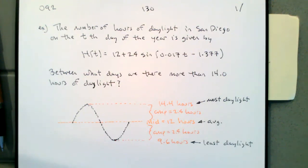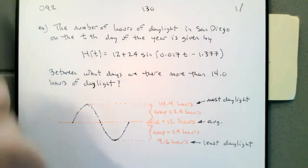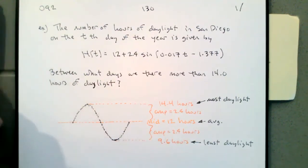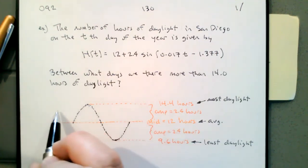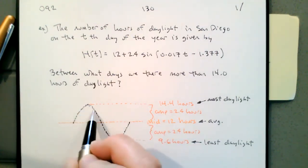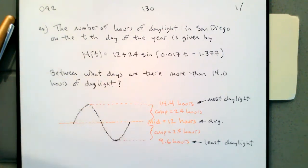The question asks: what days have more than 14 hours of daylight? The top is at 14.4 hours. We're going to draw a line at 14 and figure out where those two intersection points are, which tells us between which two days we have more than 14 hours. We'll solve the equation using a sine inverse and then place that value in the two appropriate quadrants.